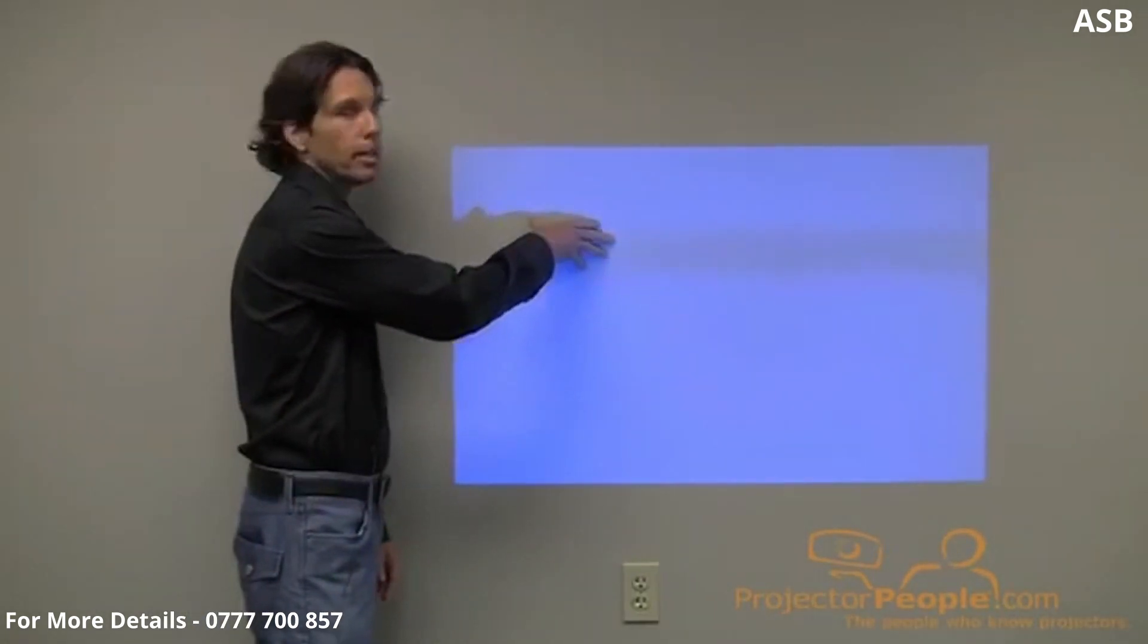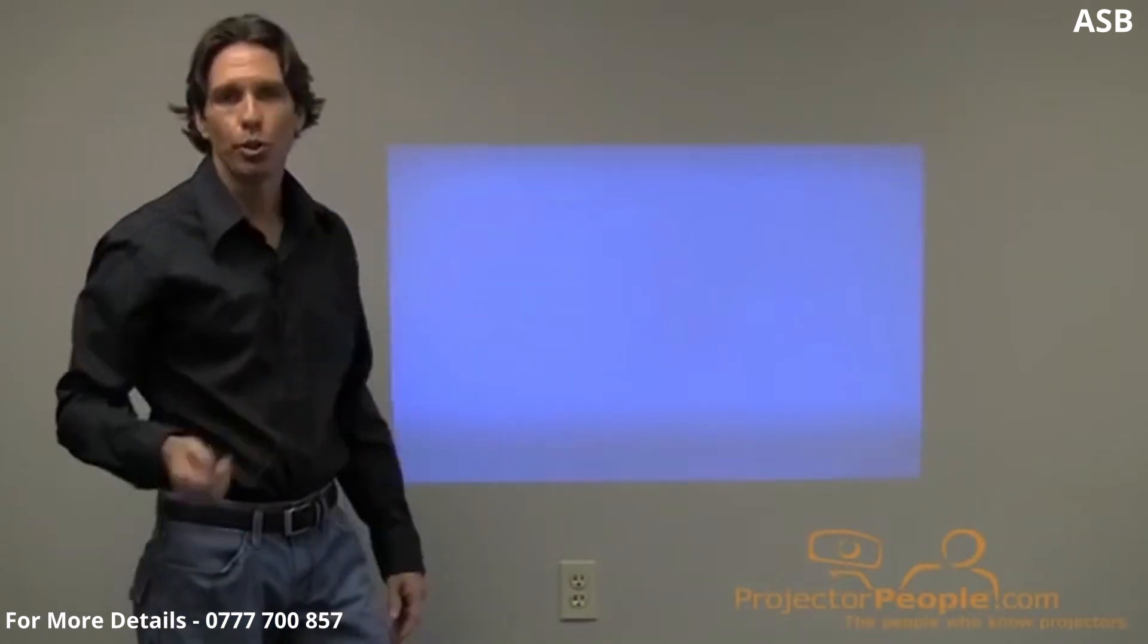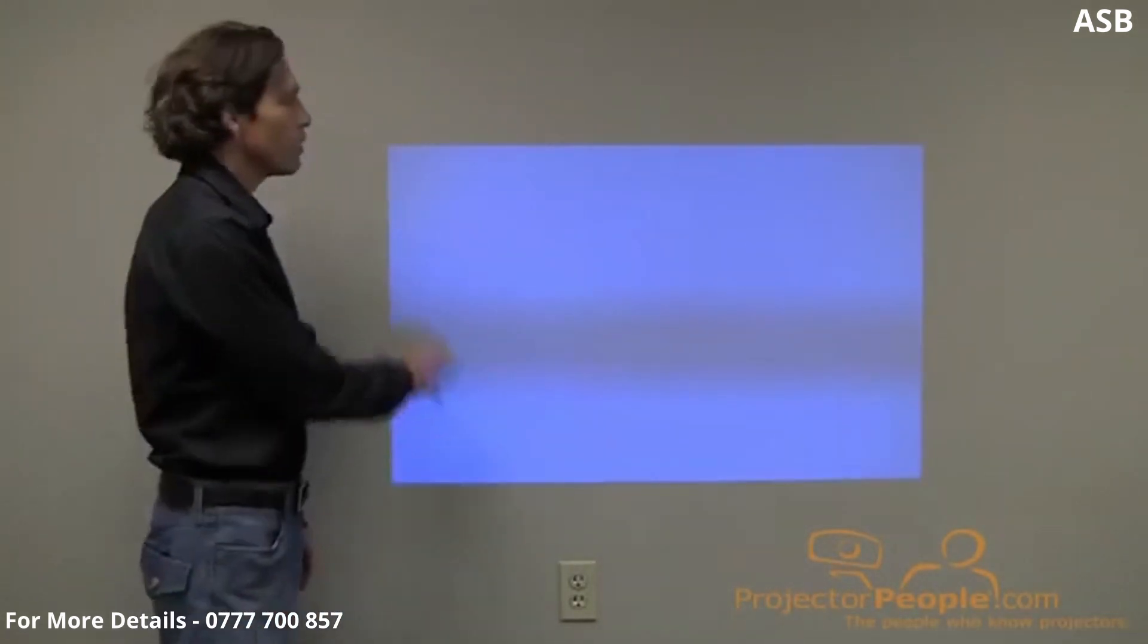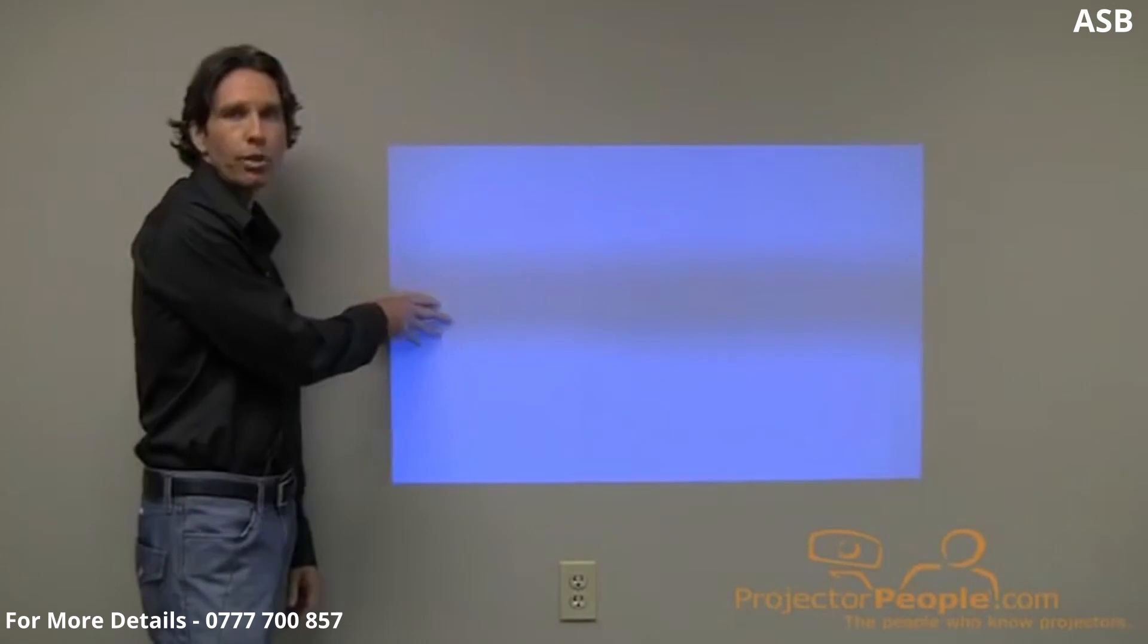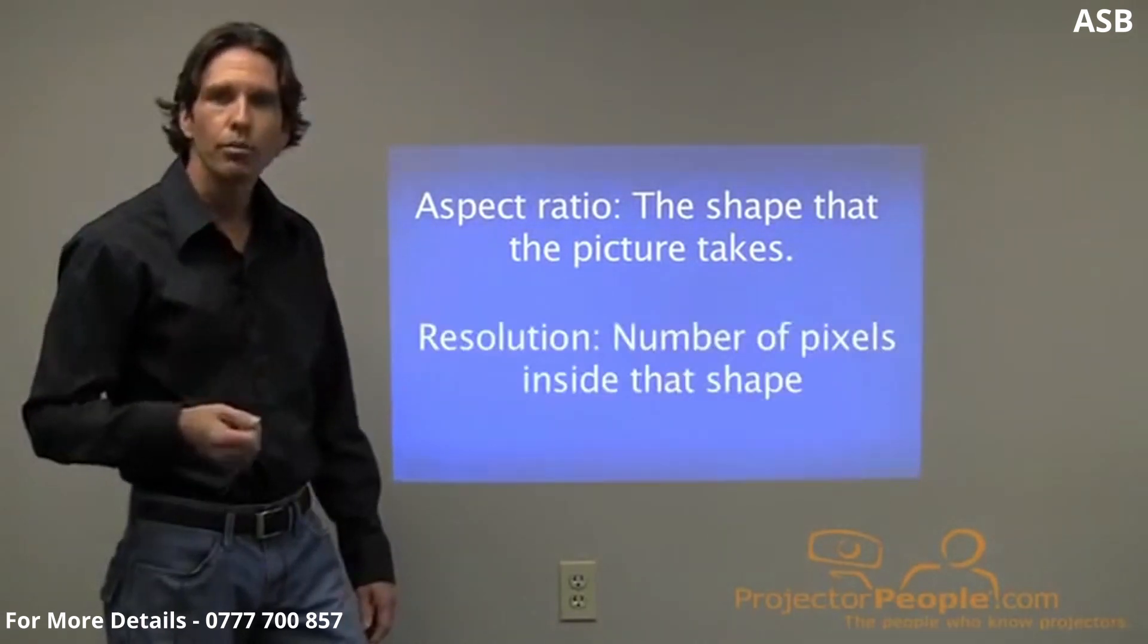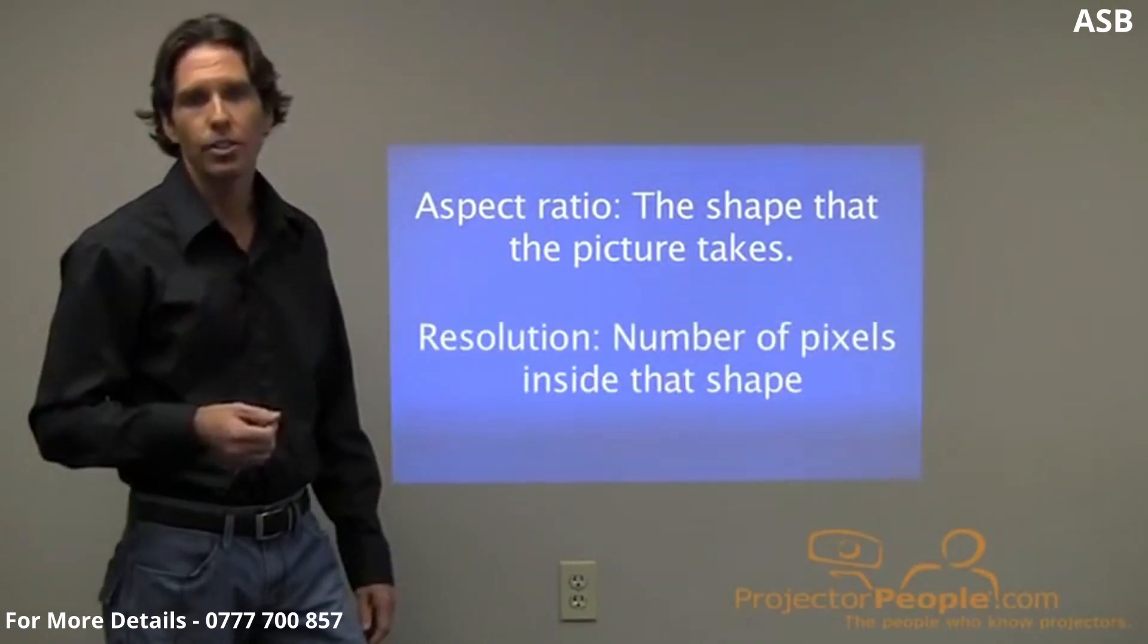First off, the definition. Resolution is the number of pixels that the projector can project out. There's a width number and a height number, basically like the square footage of a room. It's letting you know exactly how many pixels are up on the screen. Aspect ratio is the shape that the resolution takes, whether it be a square or rectangle. So you've got aspect ratio, which is the shape that the picture takes, and resolution, which is the number of pixels inside that shape.